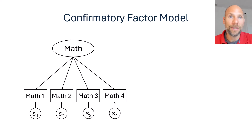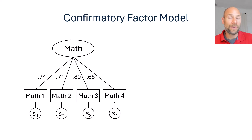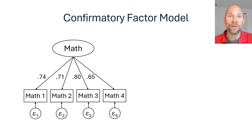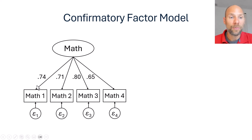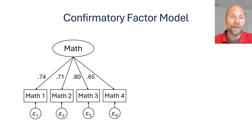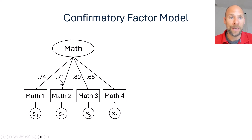As part of this model we obtain a model fit test, so we can test whether a unidimensional structure fits the four subscales. Assuming the single factor model fits well, we can then estimate standardized factor loadings. Standardized factor loadings in this model are interpreted like correlations between each variable and the underlying latent variable or true score. For example, the correlation between the first math subscale and the true score is 0.74, while the others are 0.71, 0.80, and 0.65.